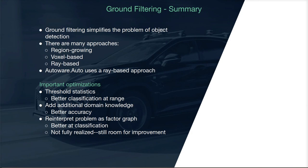So what did we just learn? Ground filtering is an important part of the object detection stack because it simplifies subsequent algorithms in the stack. There are many approaches to solve the problem, and the approach used in Autoware Auto is the ray-ground filtering based approach. The implementation in Autoware Auto has a number of improvements, including thresholding statistics to improve accuracy at range, adding additional domain knowledge, and reinterpreting the problem as a factor graph, which improves the accuracy of the approach. In the next section, we'll continue and talk about clustering or segmentation algorithms, which are the heart of the object detection stack in Autoware Auto.